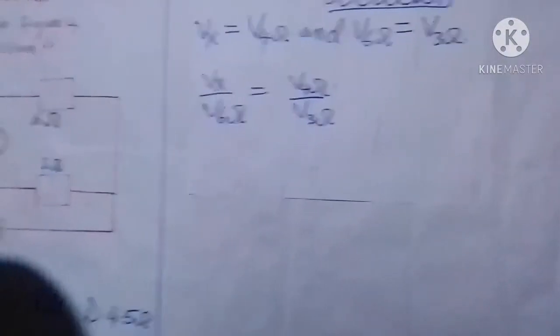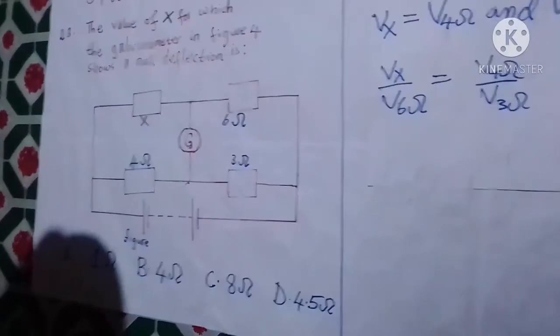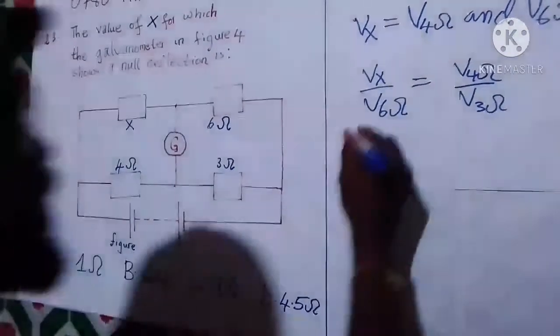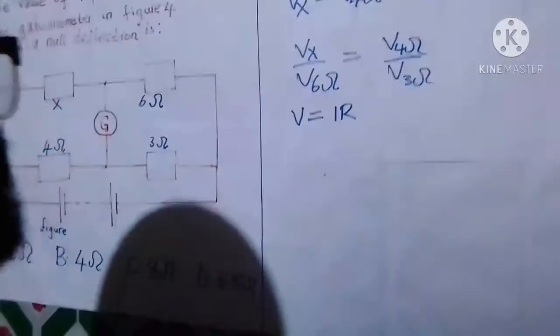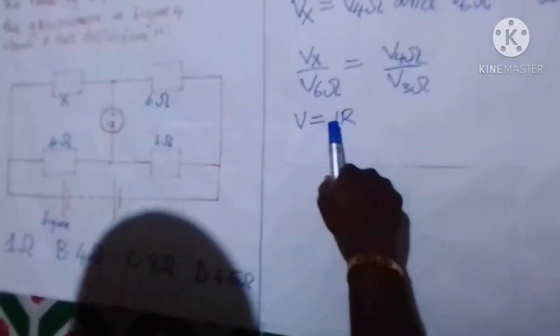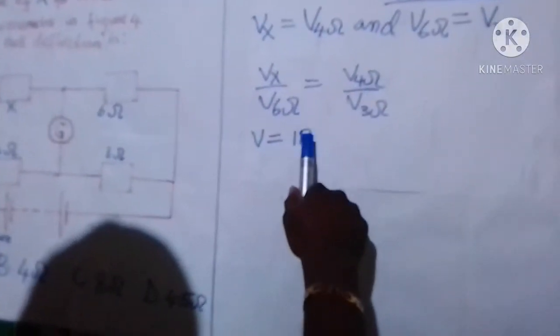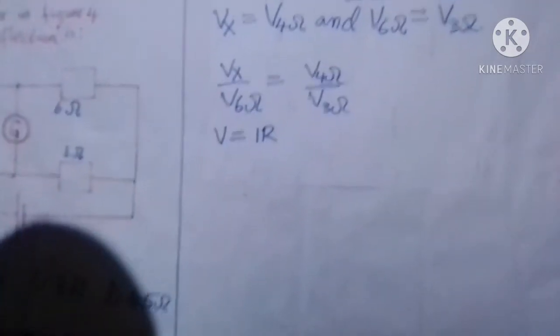Now we know from Ohm's law that V is equal to IR, where I is the current and R is the resistance.